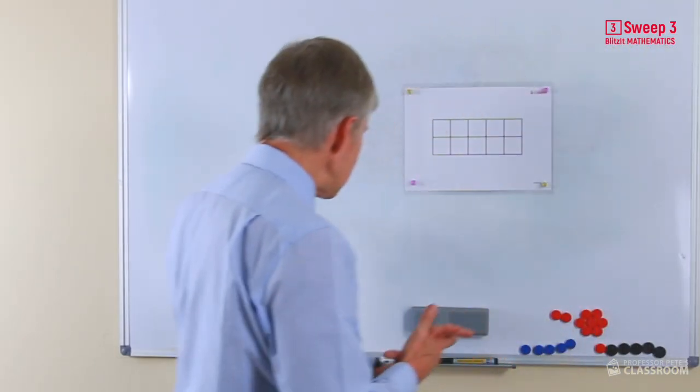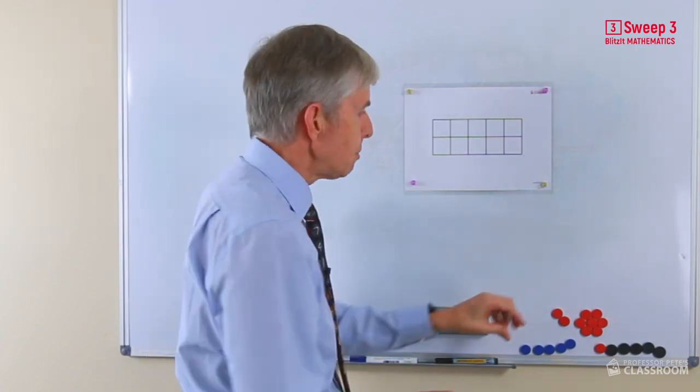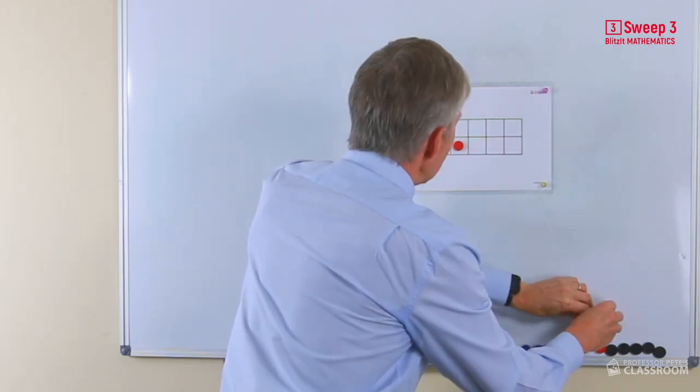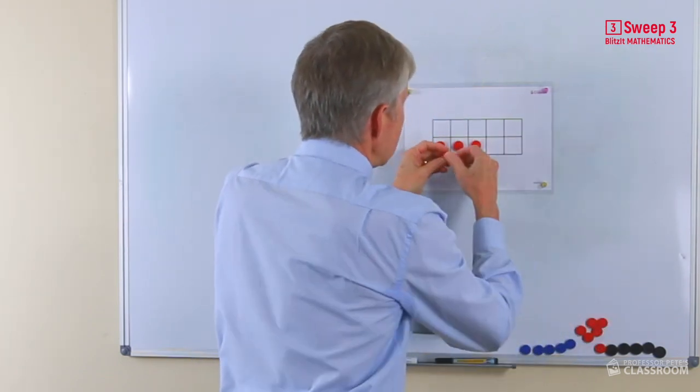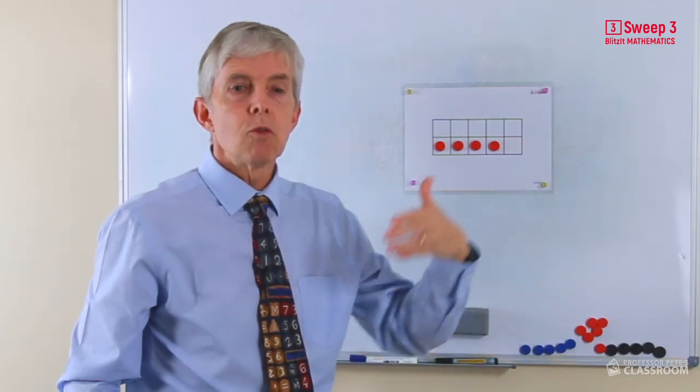So we're using a ten frame again. Now, this time we're only using one ten frame because the rainbow facts all go up to ten. So we'll start with a number on here, say, let's say four, and we can talk about the number that goes with four to make ten.